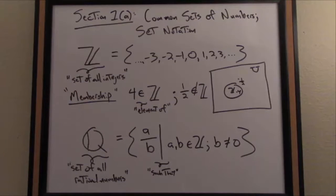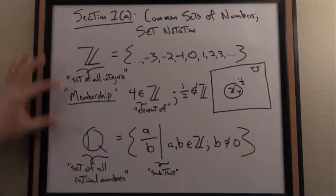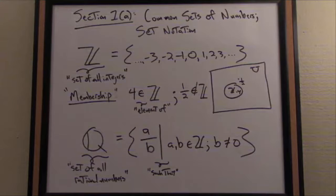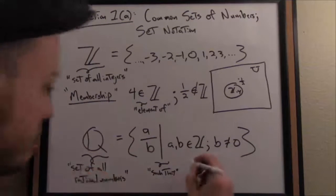One more comment on the integers and the rational numbers is they have a nice relationship. The integers are entirely contained inside of the rationals. Another way to put that is the integers are a proper subset of the rationals.